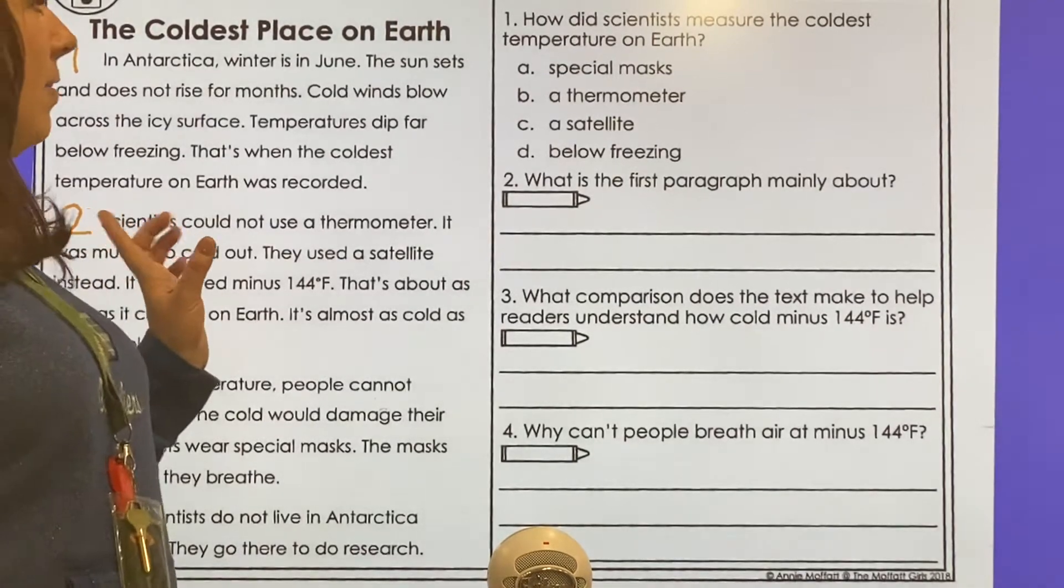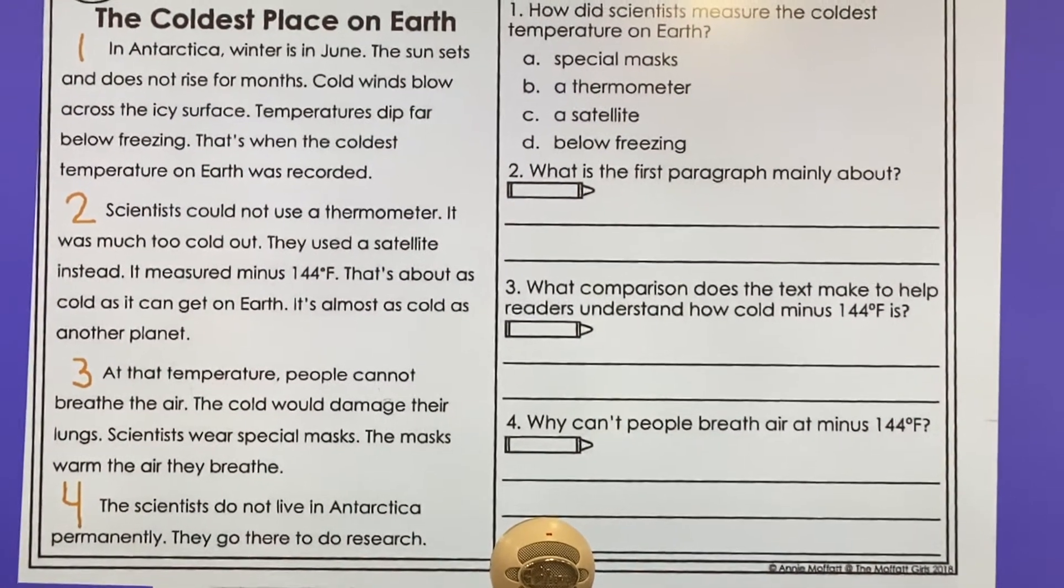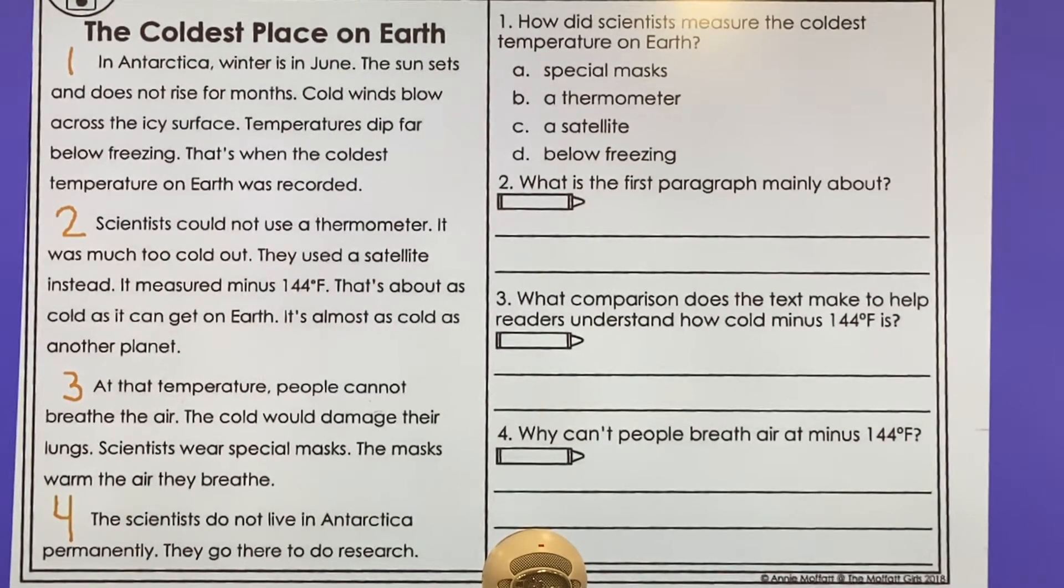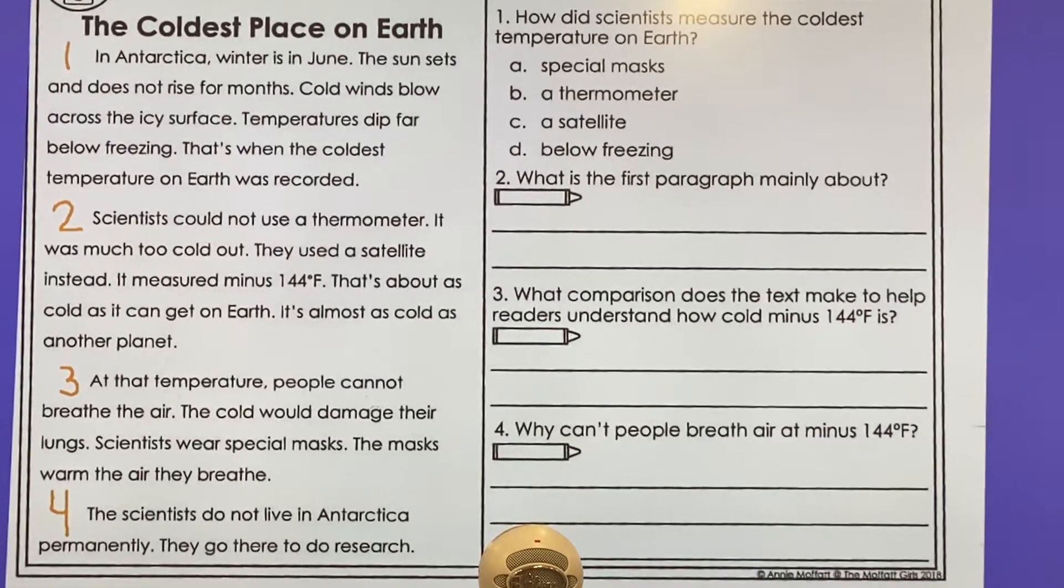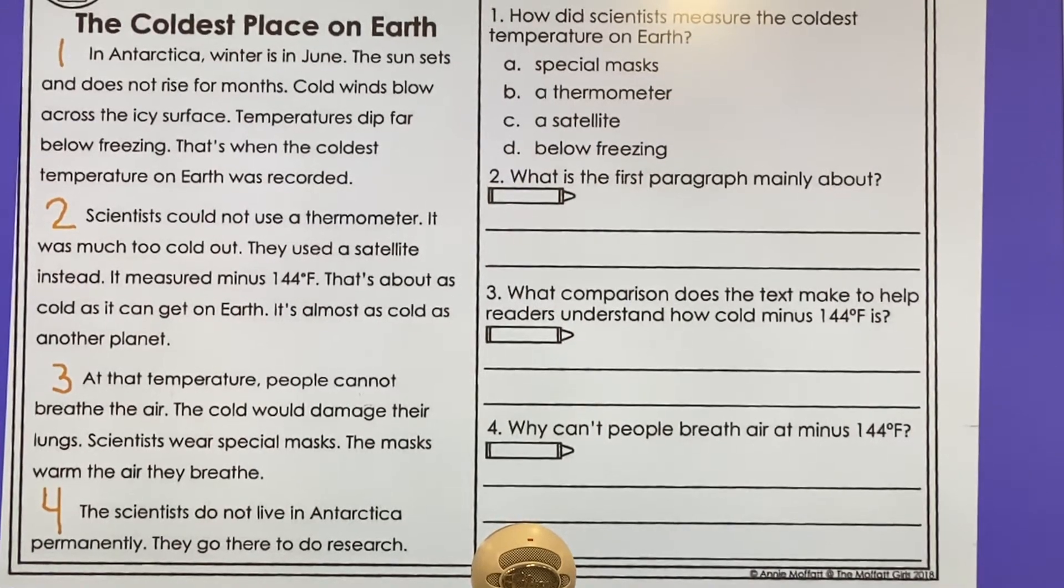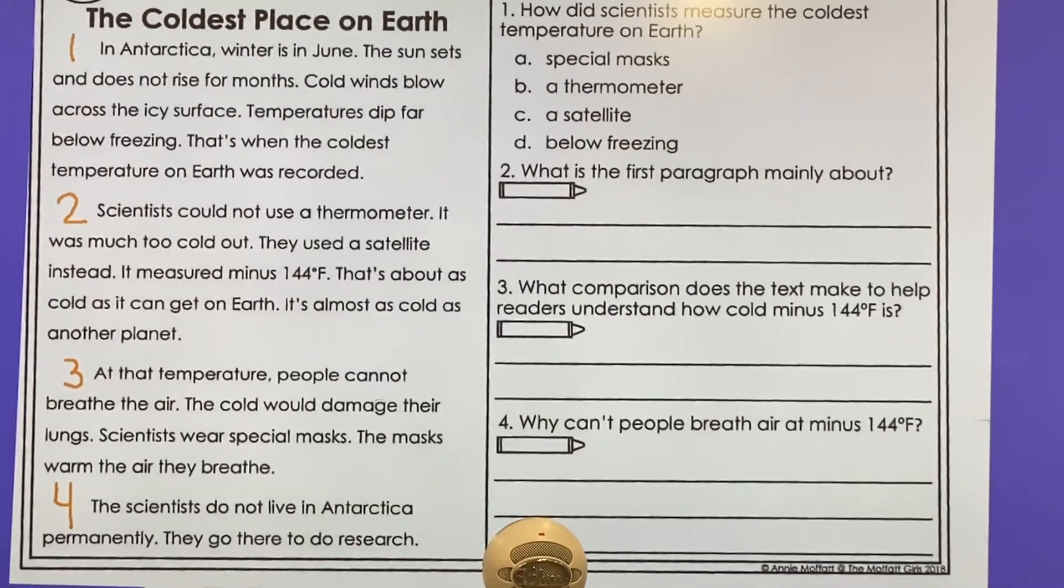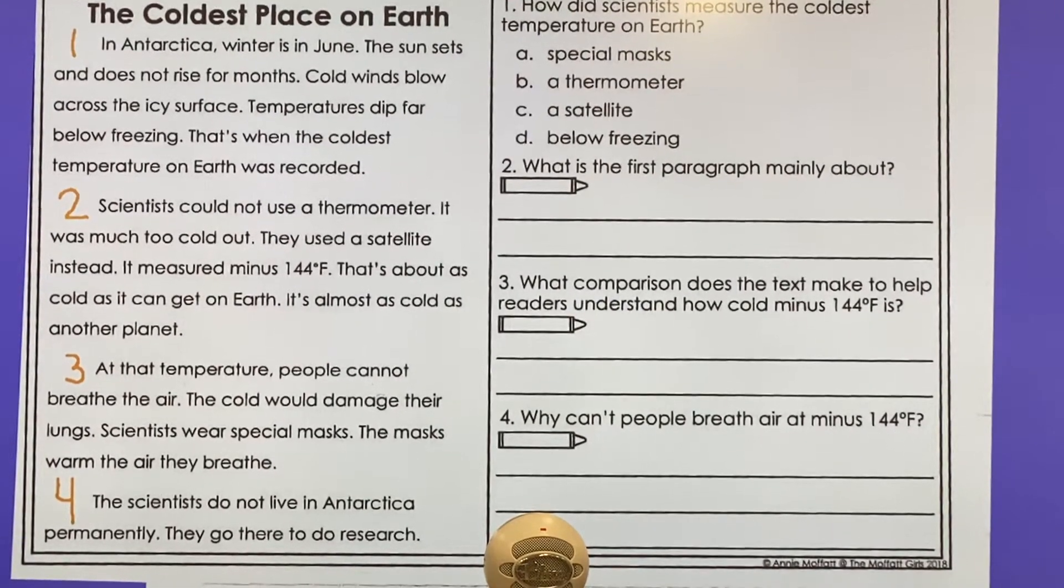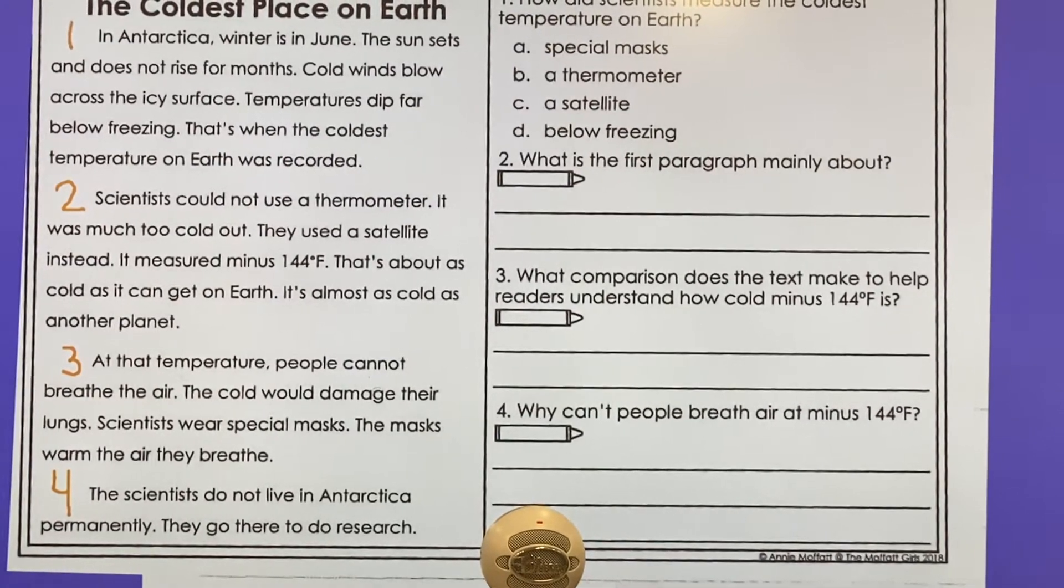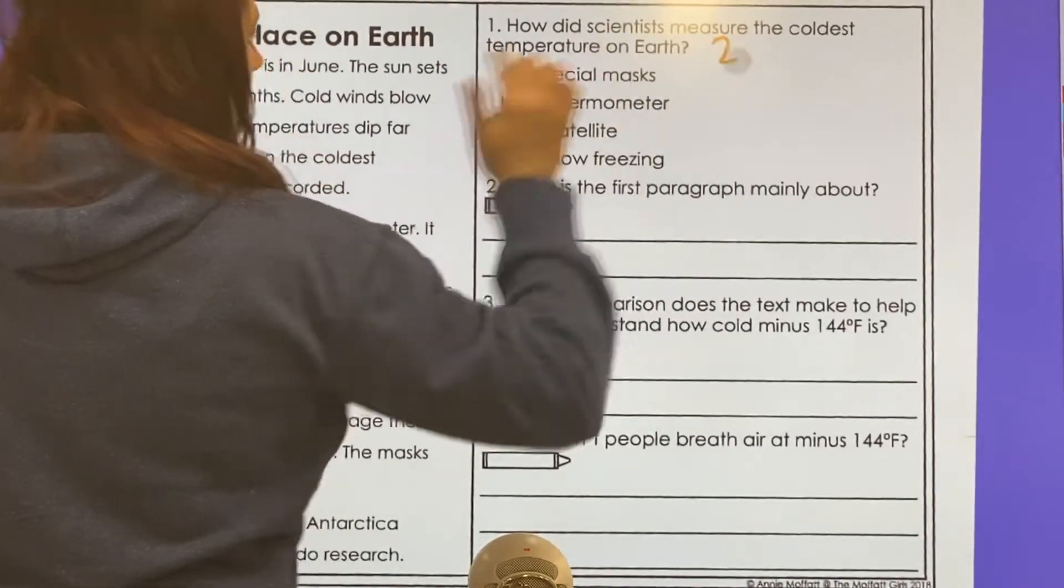Number one says, how did scientists measure the coldest temperature on earth? Make sure you go back and look. What did they use? Because I honestly thought they were going to say a thermometer, but guess what? I was wrong. As I read through the paragraphs, I found out that is not what they use to measure it. So if you read in paragraph two, you will find the answer for that. You're going to look back at two.